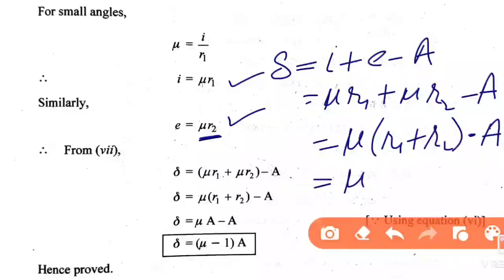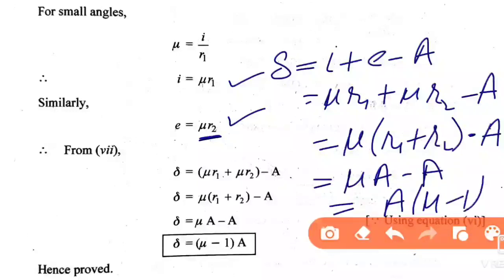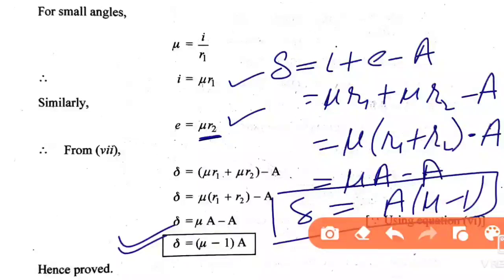Taking mu common: delta = mu(r1 + r2) - A. Since r1 + r2 = A (equation 6), substituting: delta = mu*A - A = (mu - 1)*A. Hence proved. If the question asks you to derive it, do so; otherwise this is a less important topic — if you skip it, it may still be manageable.